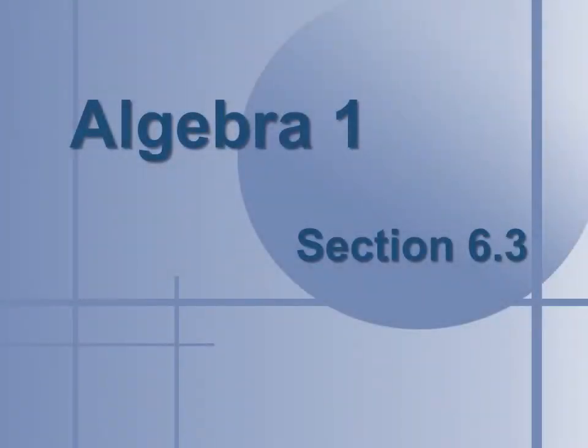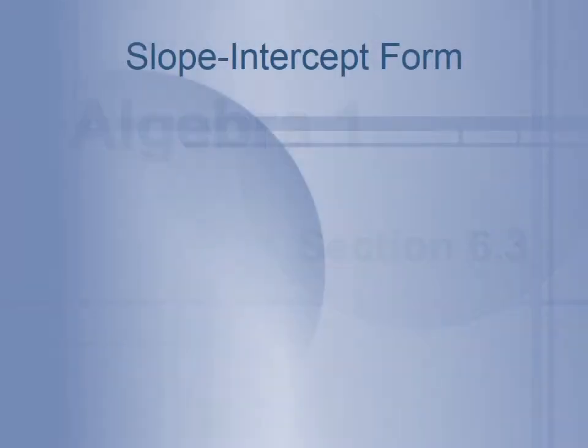Hey guys, so today we're going to continue chapter 6. This is section 3 in your textbook, and this is the slope-intercept form. So what is slope-intercept form? Well, we're going to be talking about the equation of a linear function. We already talked about the standard form of that, which was Ax plus By equals C. Now there's another form of a linear function called the slope-intercept form.